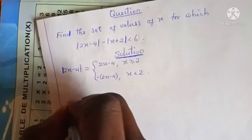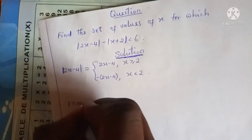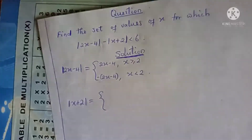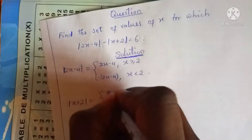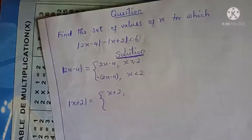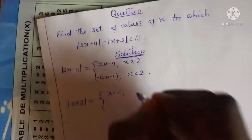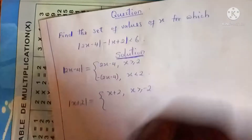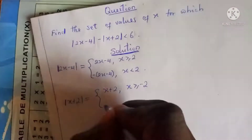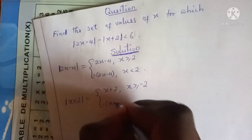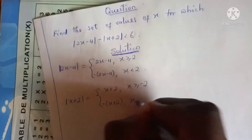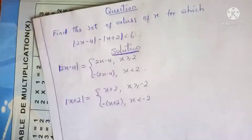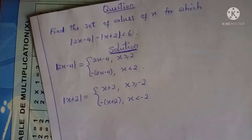I will also define the absolute value of x plus 2, which is just x plus 2 if x plus 2 is greater than or equal to 0, or if x is greater than or equal to negative 2; or negative of (x plus 2) if x plus 2 is less than 0, or if x is less than negative 2.